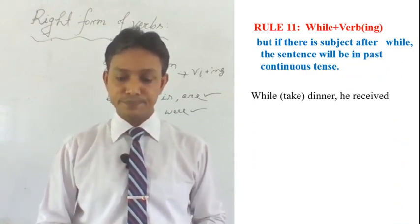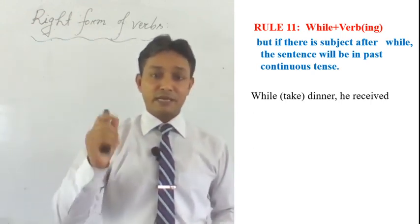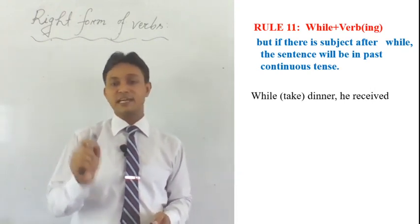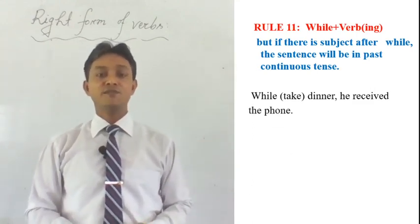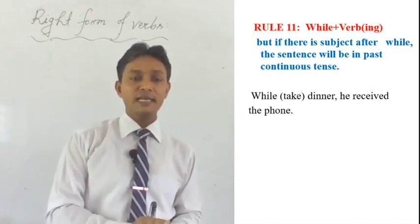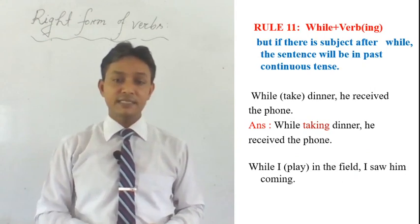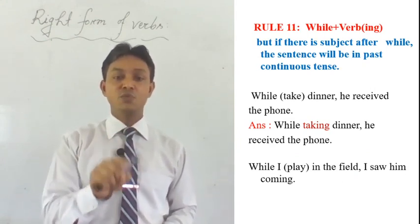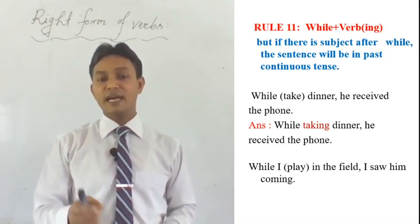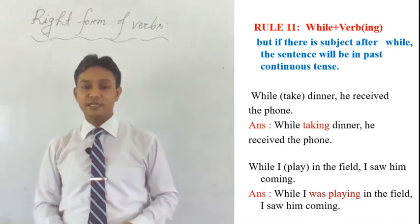Rule number eleven: related to the word 'while'. If a verb comes immediately after the word 'while', we add ING with that verb — for example, 'while taking dinner, he received the phone.' But if there is a subject between 'while' and the verb, we write the sentence in past continuous tense — for example, 'while I was playing in the field, I saw him coming.'